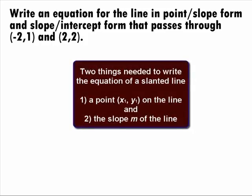There are always two things that we need to write an equation of a slanted line. One is we need one point that the line passes through. The other is we need the slope of the line. We can use either point to fill in for our needed one point, but it looks like we need to find the slope.